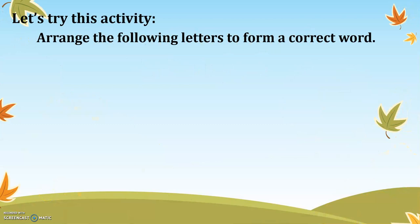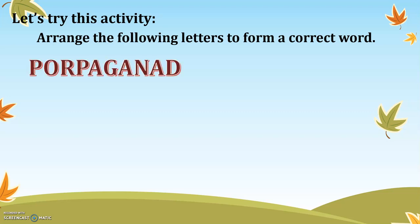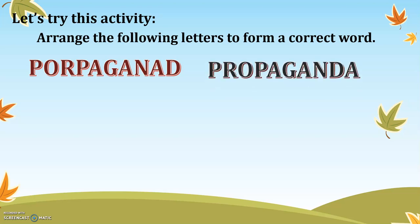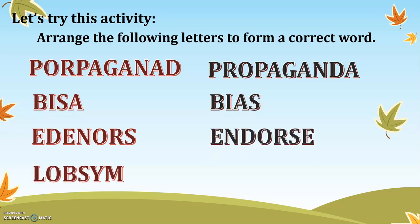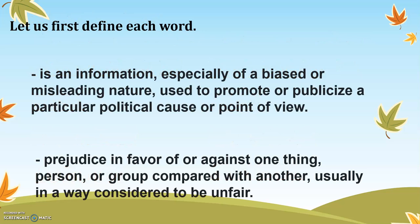Before we start with our lesson, let's try this activity first. Arrange the following letters to form the correct word — words that are related to our new lesson. The answers are: propaganda, bias, endorse, and symbol. Great job everyone!